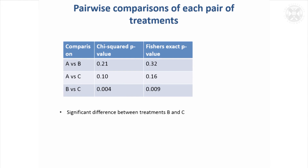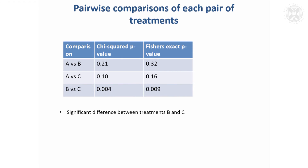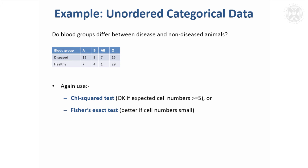Here are the p-values for each of the pairs of comparisons between treatments. Only one comparison was significant: treatment B had a significantly lower cure rate than treatment C — the most extreme rates in the dataset. The other comparisons were non-significant. In reporting these, I would put 'NS' for the non-significant p-values rather than listing the actual values, though the actual values are shown here so you can see them.